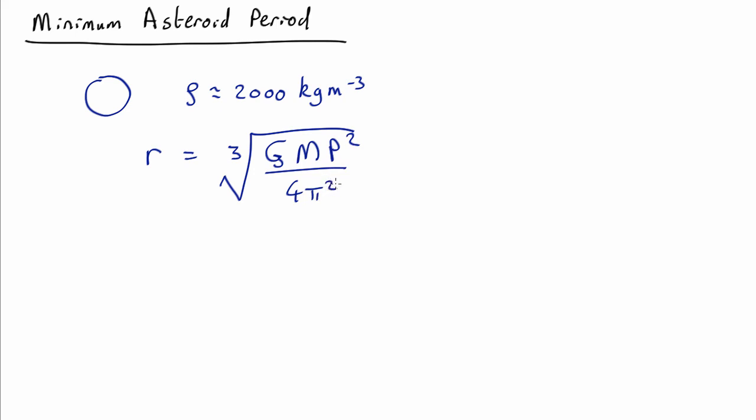Now we're going to need to rearrange to find the minimum period and we don't know the mass, we just know the density. Well that bit's pretty easy because the mass is just going to be the volume for a sphere, 4 thirds pi r cubed times the density.